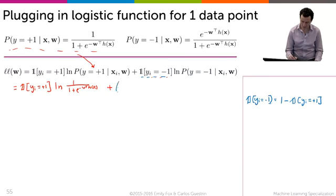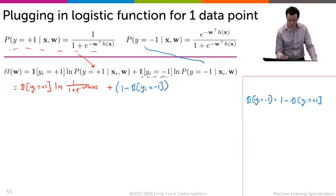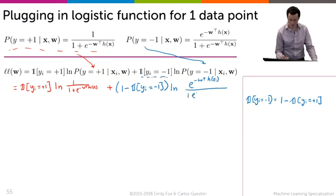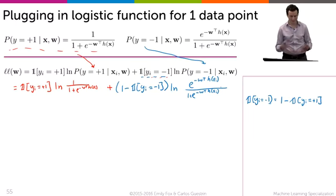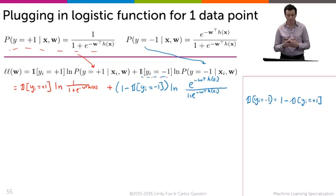So let's plug that in. From the second term we get 1 minus the indicator that y_i is equal to plus 1, and we're going to plug in the definition of the probability that y equals minus 1. So that's the log of e to the minus w transpose h of x_i, divided by 1 plus e to the minus w transpose h of x_i. Now we have our two terms, and we're going to move things around and simplify the equations pretty significantly.